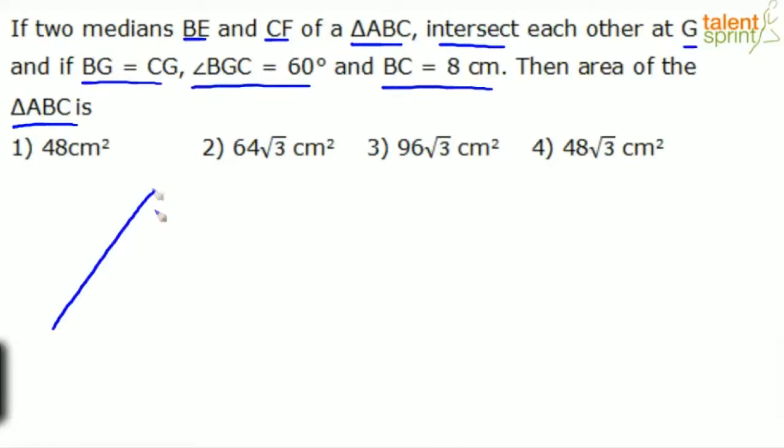So let's consider the triangle here. The triangle is ABC - this is A, B, and C. Now he says the medians BE and CF. A median is the line joining a vertex to the midpoint of opposite side. So BE would be as shown here, with E as the midpoint of side AC.